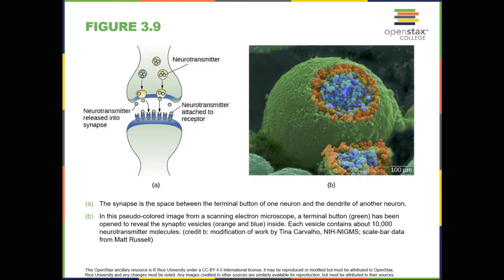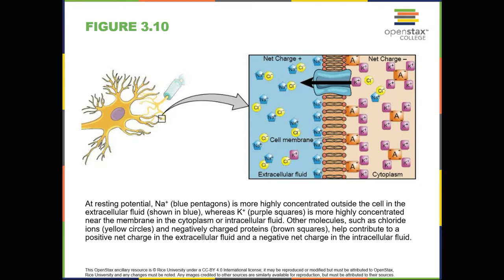Neuronal communication. Now that we've learned about the basic structures of the neuron and the role that these structures play in neuronal communication, let's take a closer look at the signal itself — how it moves through the neuron and then jumps to the next neuron, where the process is repeated. We begin at the neuronal membrane. The neuron exists in a fluid environment, surrounded by extracellular fluid and contains intracellular fluid called cytoplasm. The neuronal membrane keeps these two fluids separate, a critical role because the electrical signal that passes through the neuron depends on the intra- and extracellular fluids being electrically different.